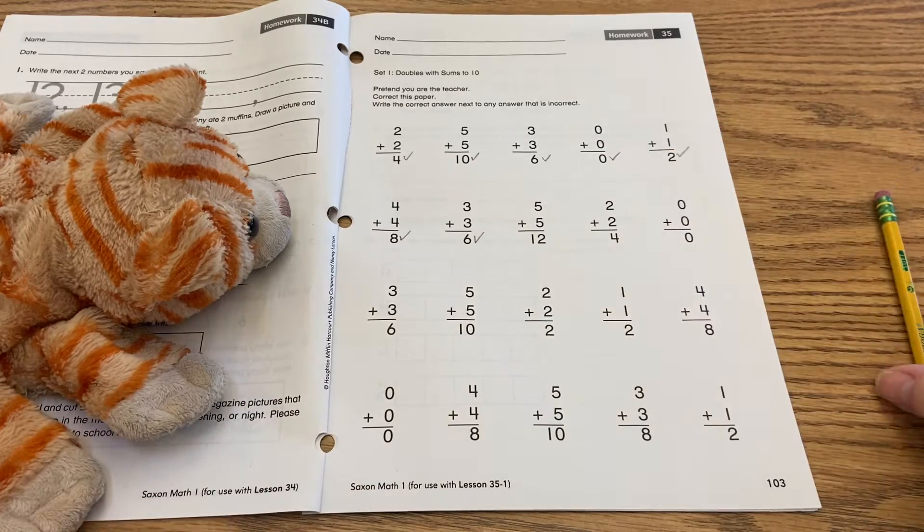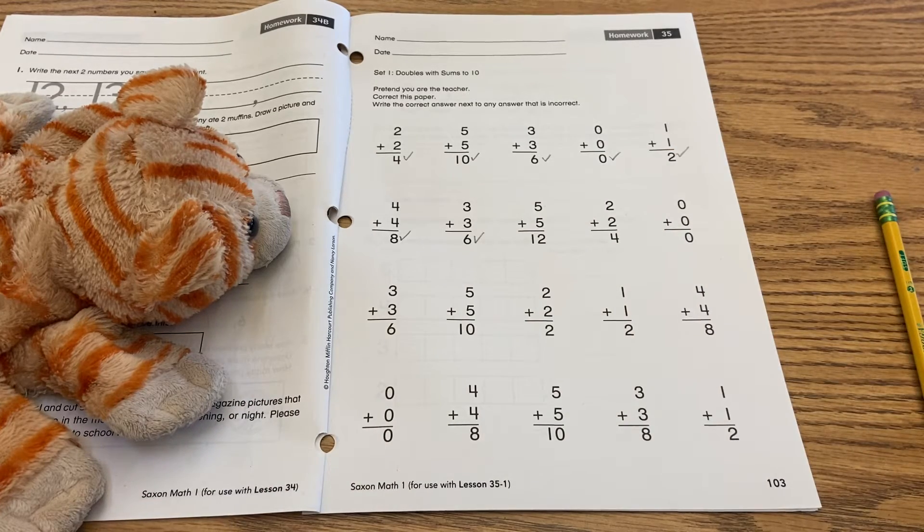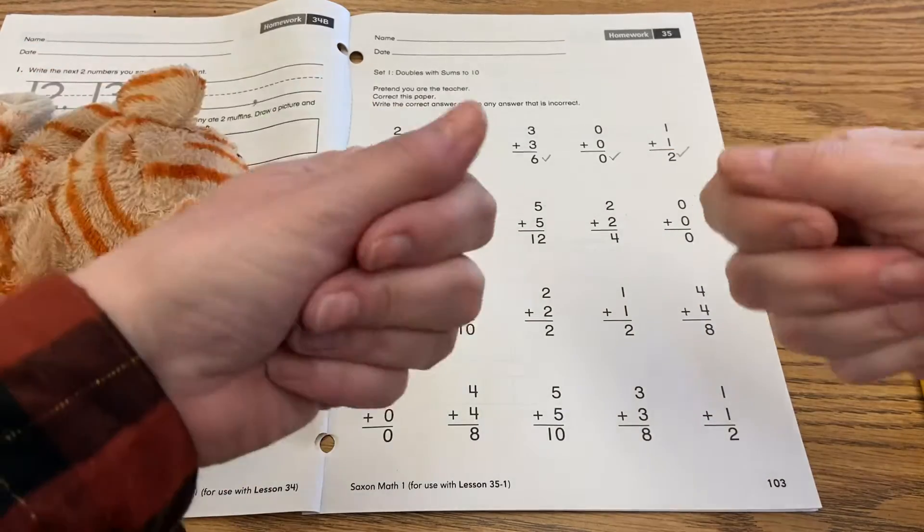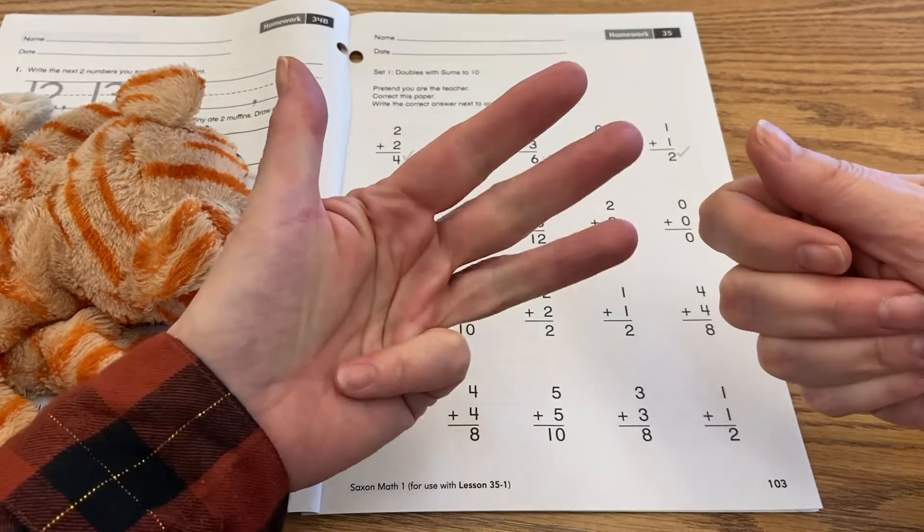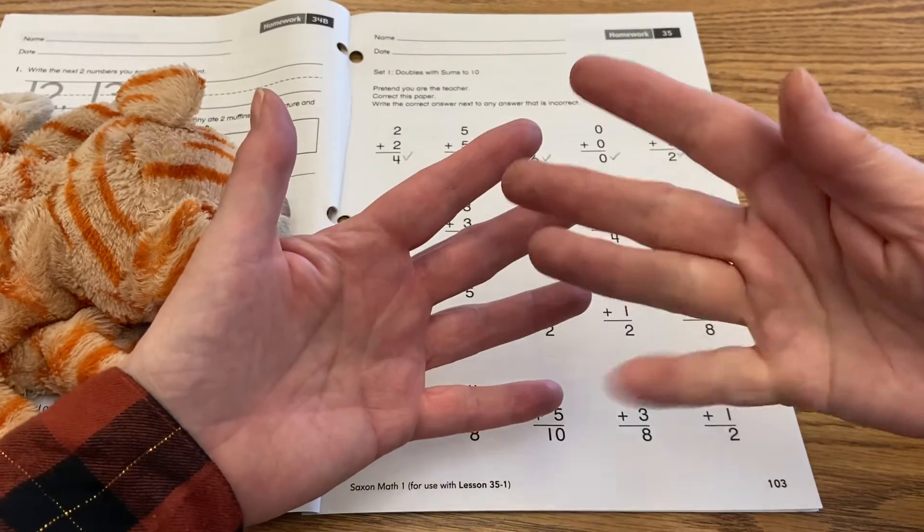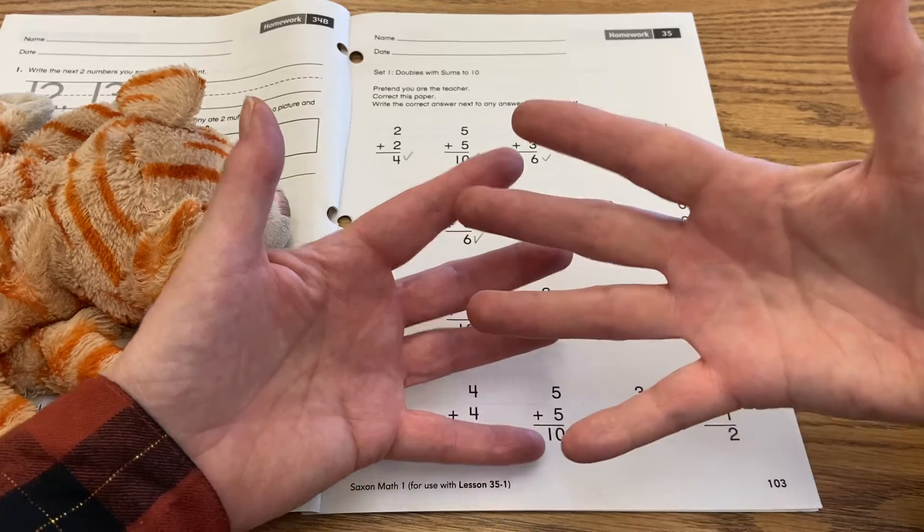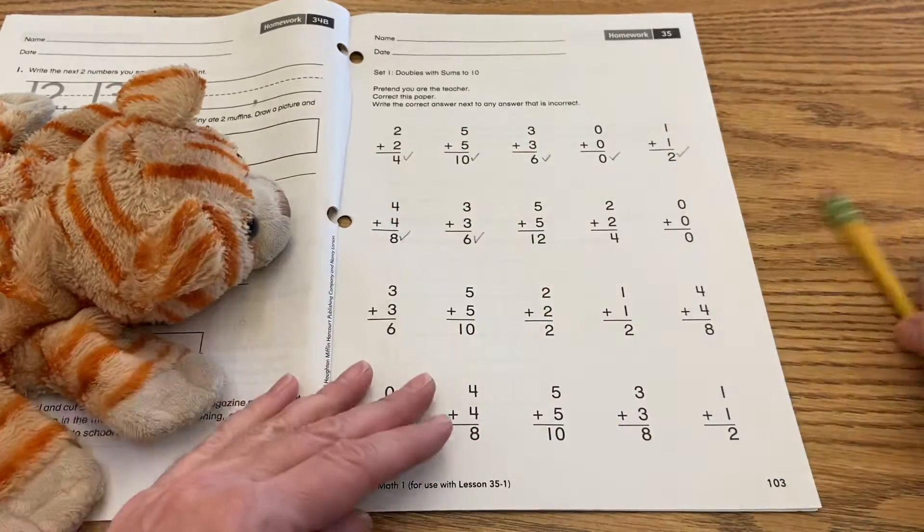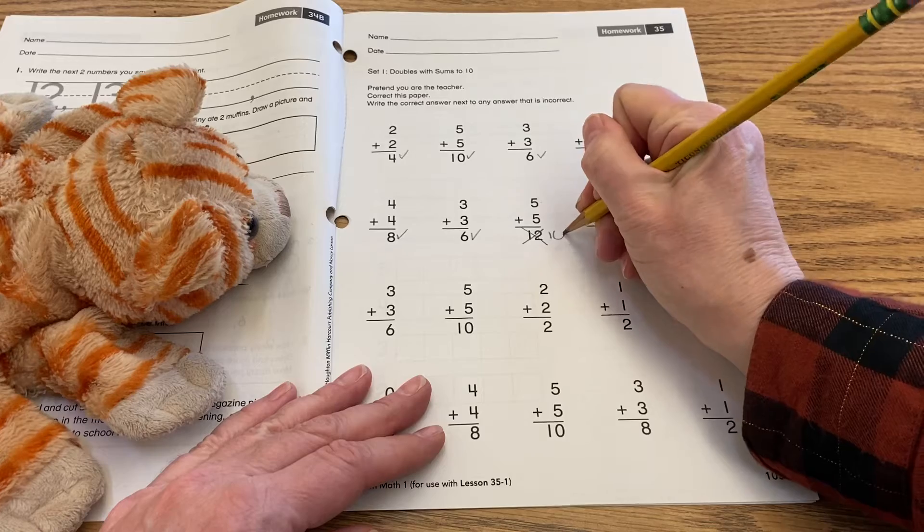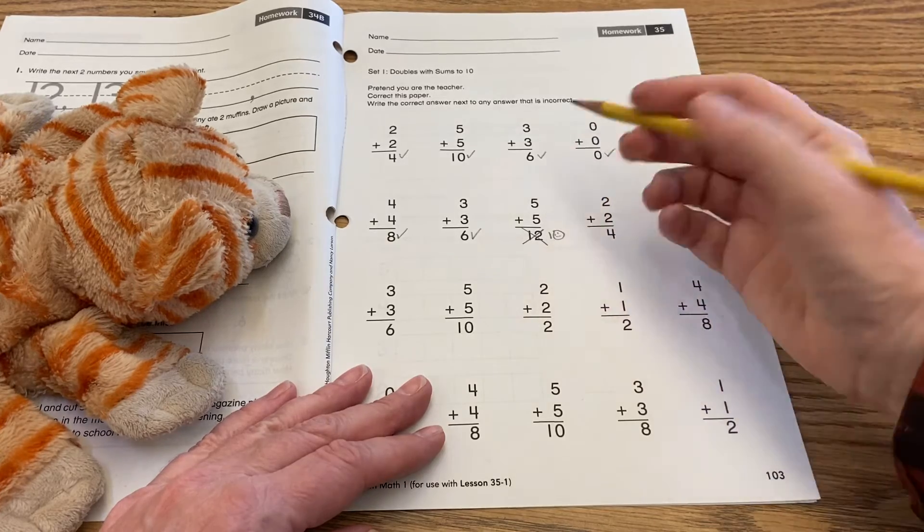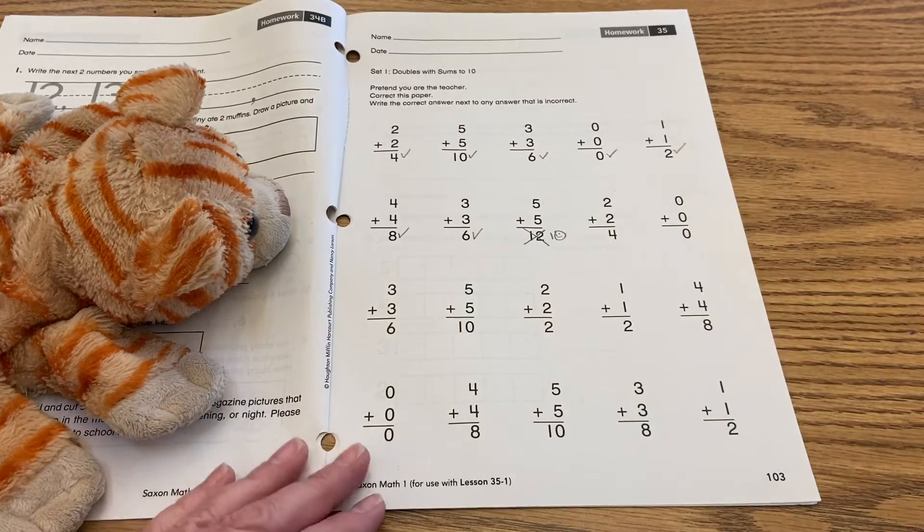Five plus five, twelve. Let's look at that. I don't think that's correct. Let's see. One, two, three, four, five, six, seven, eight, nine, ten. So that's what five plus five equals, so we have to cross this out and put ten. So no check there. We just write in the correct answer.